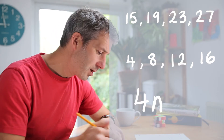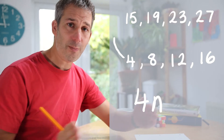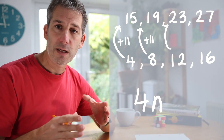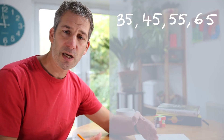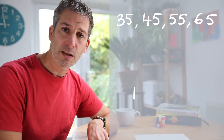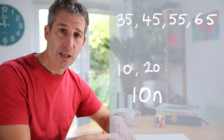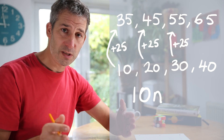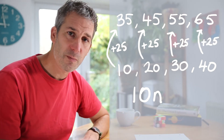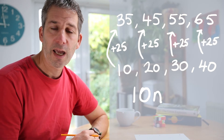The next one — 15, 19, 23 — it's going up in fours, so it's to do with the four times table: four n. But it starts on 15, so we've had to move up 11 places. So it's four n add 11. The next one — 35, 45, 55 — it's going up in tens, so it's to do with our 10 times table: 10 n. But the 10 times table starts at 10 and this one starts at 35, which is 25 places along. So all of those numbers are like the 10 times table shifted 25 places along: 10 n plus 25.